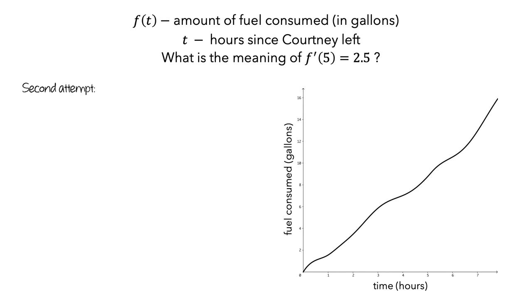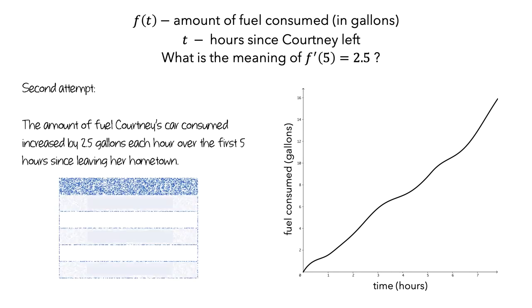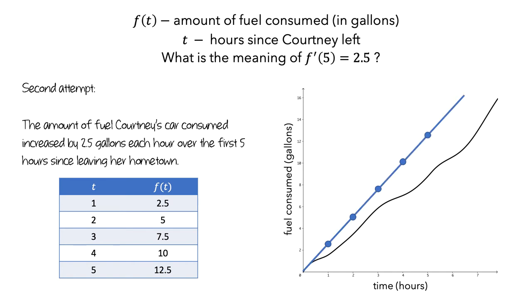Here is another common description. The amount of fuel Courtney's car consumed increased by 2.5 gallons each hour over the first 5 hours since leaving her hometown. This would mean that if we made a table of values of t and f(t), Courtney would have used 2.5 gallons after 1 hour, 5 gallons after 2 hours, 7.5 gallons after 3 hours, and so on. If we plotted these values as coordinates on the graph, the fuel consumption would look like this.